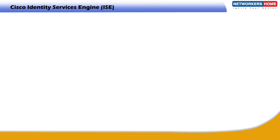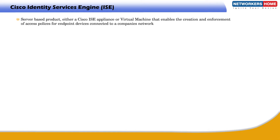Cisco ISE, Cisco Identity Service Engine, is a server-based product — either a Cisco ISE appliance or virtual machine — that enables the creation and enforcement of access policies for endpoint devices connected to a company's network. In simple terms, you can control who can access your network and, when they do, what they can get access to.